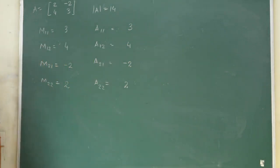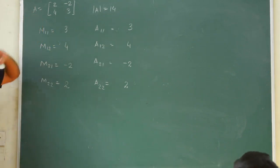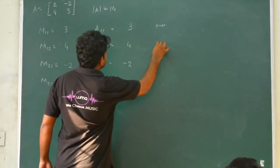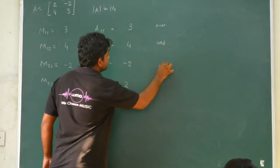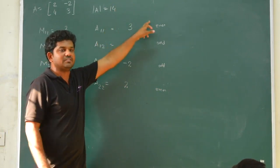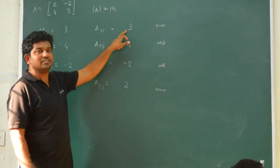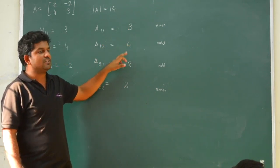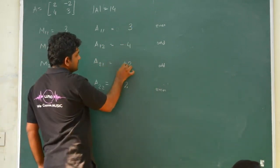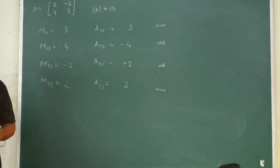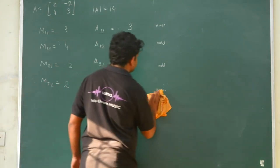For a 2×2 matrix, finding cofactors is slightly different. For position 1,1: 1 plus 1 equals 2, which is even, so no change. For 1,2: 1 plus 2 equals 3, odd, so change sign. For 2,1: 2 plus 1 equals 3, odd, so change. For 2,2: 2 plus 2 equals 4, even, so no change. The sign pattern for a 2×2 matrix is: no change, change, change, no change.